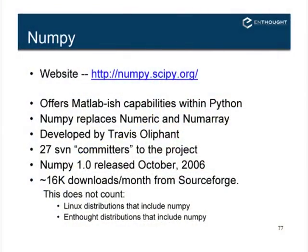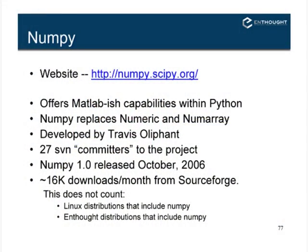He was successful and released NumPy — the 1.0 release was late last year. It's been very successful and has now unified us back into having one package to do these basic things, which is very nice. Travis is definitely the main committer and still continues to be on the NumPy toolset, but there's also a large set of other people contributing. There were 16,000 downloads per month on SourceForge about six months ago, so it's a widely distributed, widely used tool.